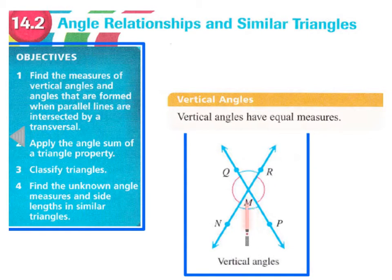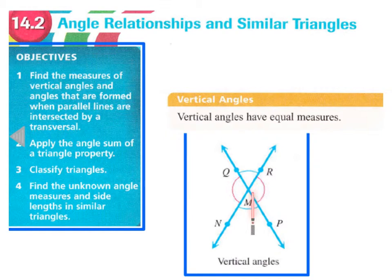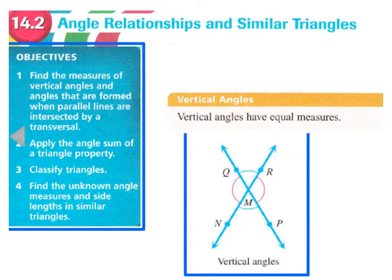So like angle M here and angle QMR — those are vertical angles. And then these two angles with the red arcs are also vertical. You should be able to tell by looking that those vertical angles straight across from each other at intersecting lines are equal in measure. That's an important property we use when working with triangles and other angle relationships.